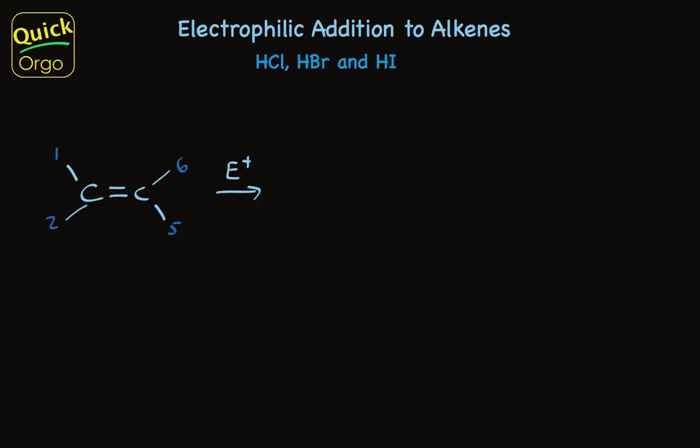Electrophilic addition is the main reaction pathway for addition to a double bond, and by addition we mean breaking the pi bond and forming two sigma bonds to something attached to each carbon. Electrophilic addition is a two-step process.